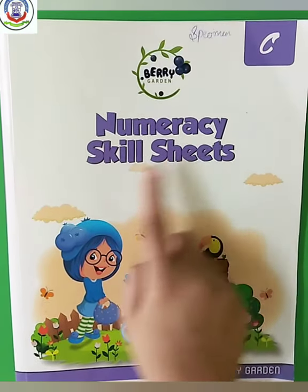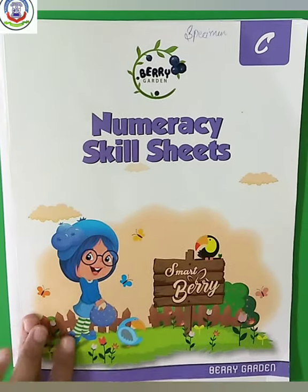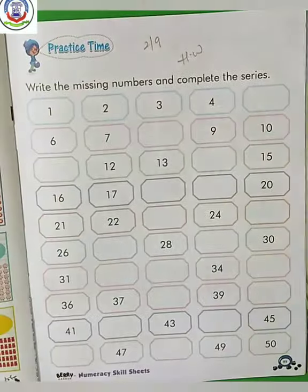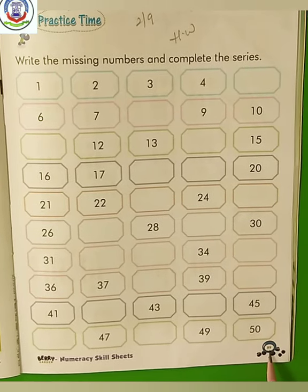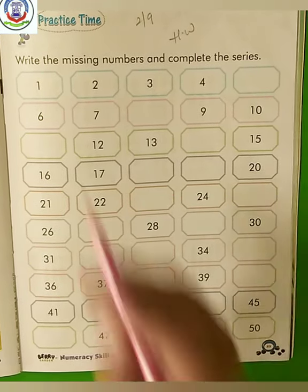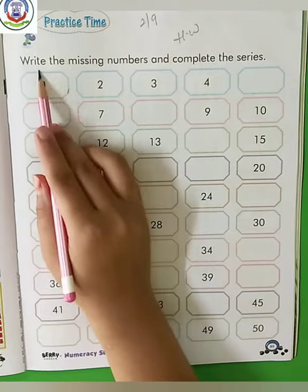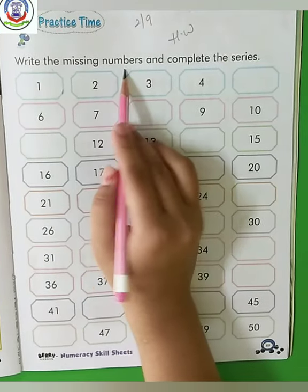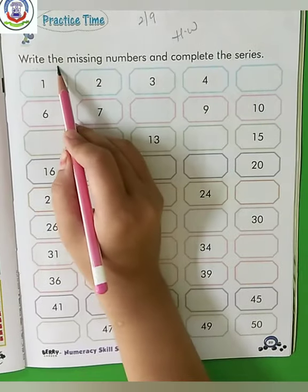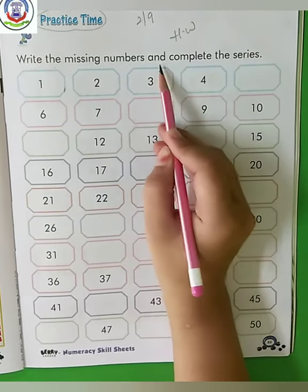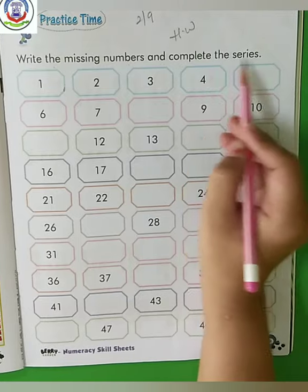Kids, take out your numeracy skill sheet book and open page number 89. Practice time. Write the missing numbers and complete the series.